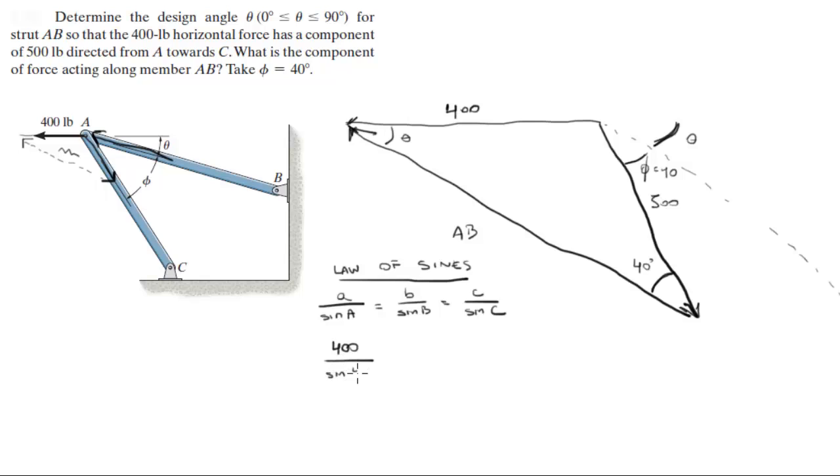You know the 400 over the sine of 40 is equal to 500 over the sine of theta. If we solve for theta, we get that theta is equal to 53.46 degrees.